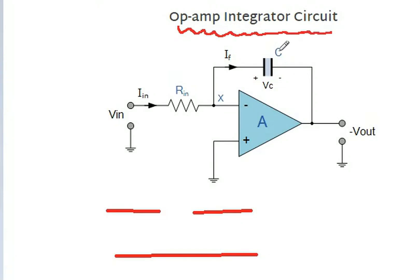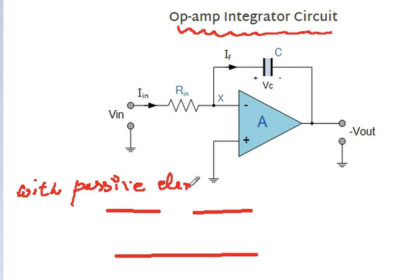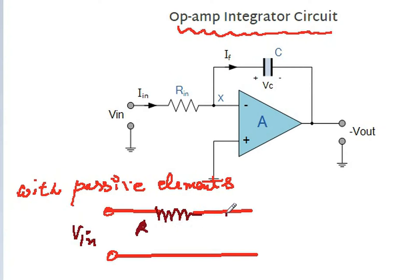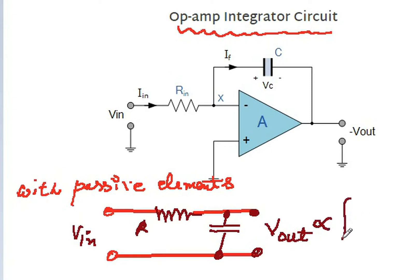This is the circuit for an operational amplifier used as an integrator. Integration can also be achieved with the help of passive elements. Passive circuits can give integration by using a resistor and capacitor, where the input is given to the resistor and output is taken across the capacitor. This circuit is able to perform integration, with output proportional to the integration of the input.